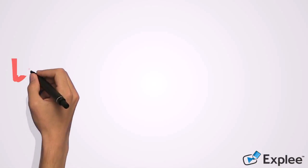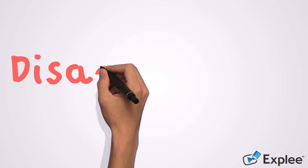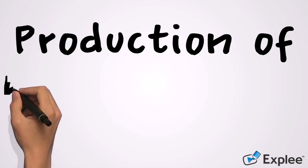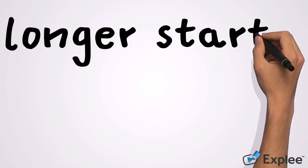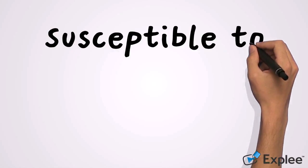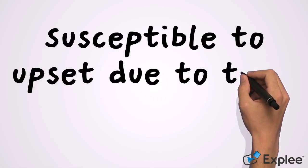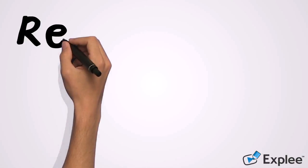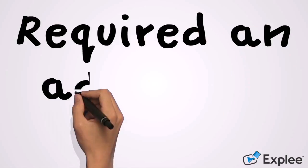Anaerobic rotating biological contactors disadvantages: firstly, production of hazardous gas; longer startup time; susceptible to upset due to toxic substances; and lastly, requires advanced treatment.